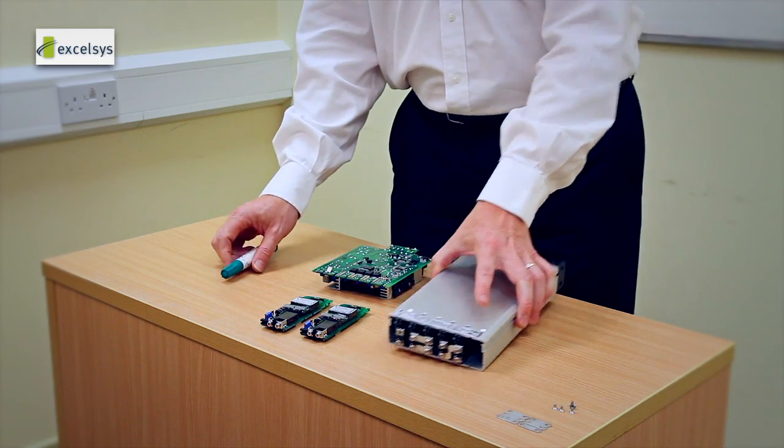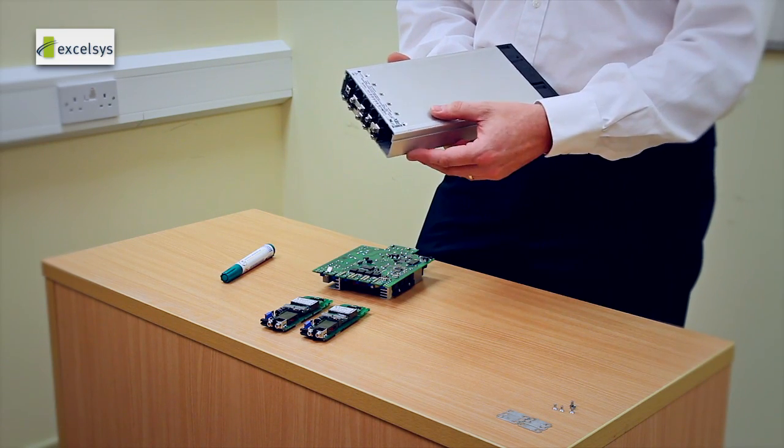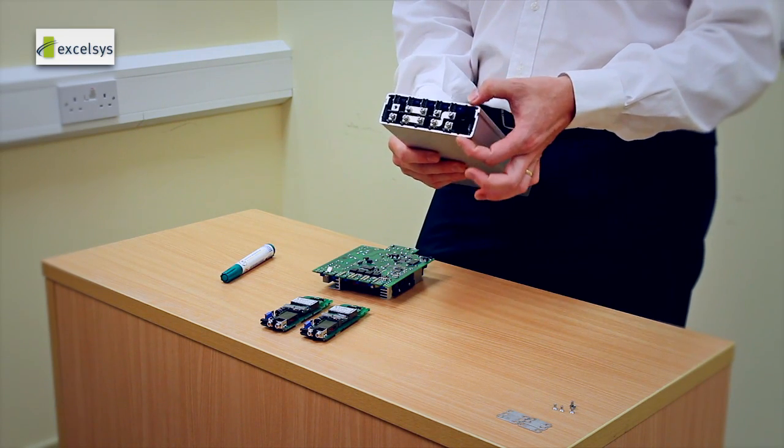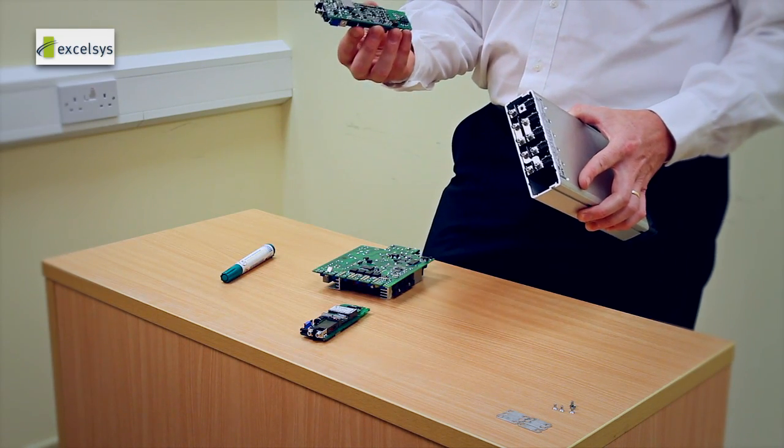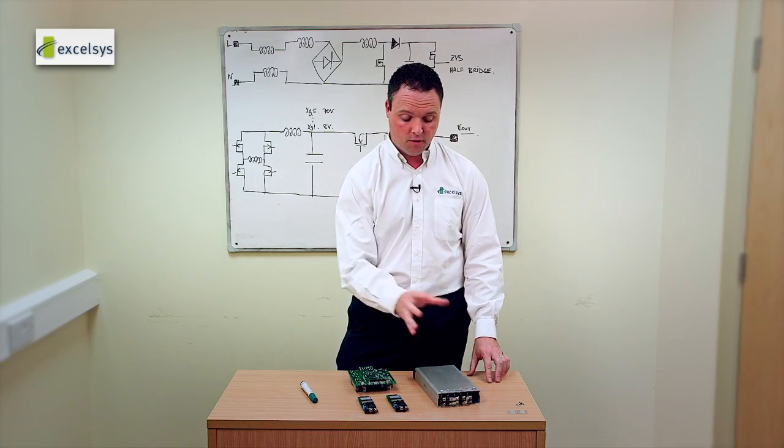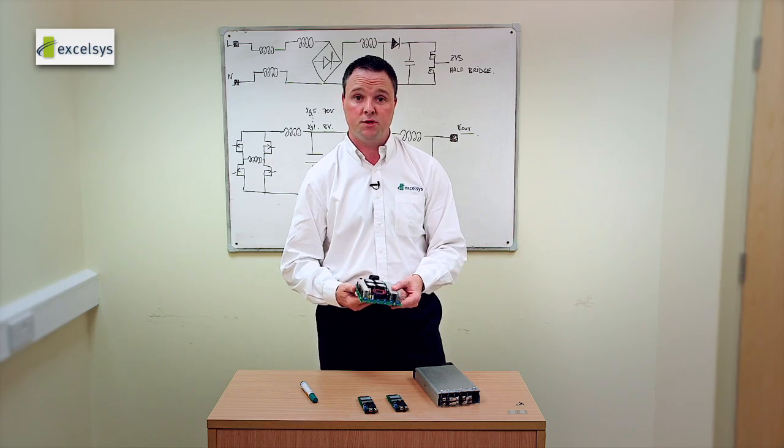If you look first from a mechanical point of view, you'll note that the chassis is extruded aluminum with grooves that are pre-prepped to allow the insertion of the various power modules. Now, if I take the unit out of the chassis, here's one that I have.